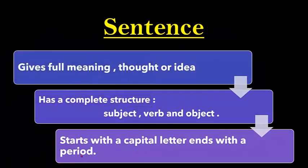A sentence must include three main parts or three main descriptions. Number one, concerning the meaning: it should give a full meaning, thought, or idea. So a sentence gives a full meaning, thought, or idea. It has a complete structure like subject-verb-object or subject-predicate, that will help to understand the full meaning of the sentence. You will be able to know who did what, for whom, and when.